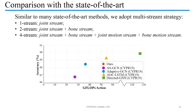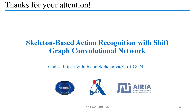When compared with state-of-the-art methods, we adopt the commonly used multi-stream strategy. As shown in the figure, the proposed Shift GCN outperforms current state-of-the-art methods with more than 10 times less computational cost. Our code is available on GitHub. Thank you.